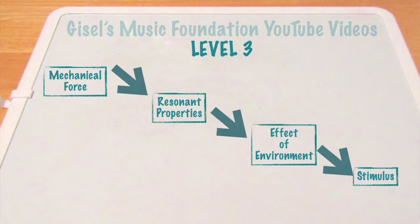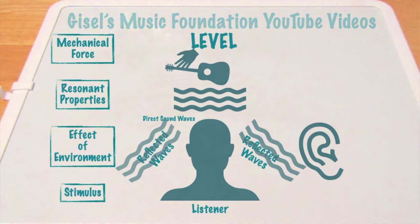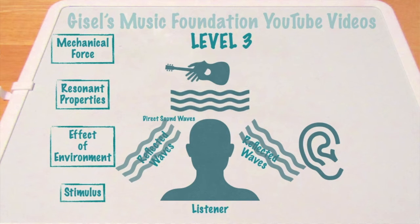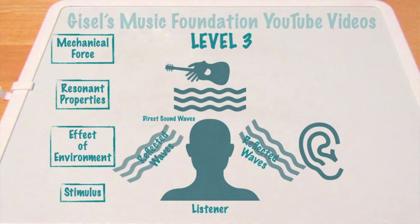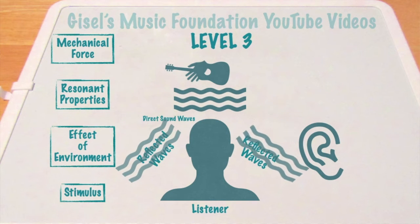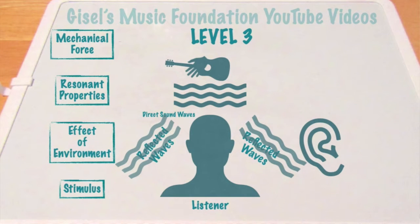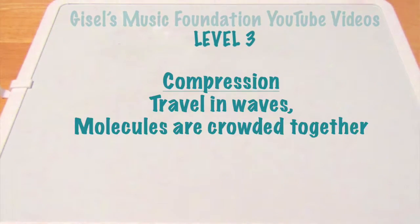Sound is a vibration that travels through matter. First, there is mechanical energy — for instance, someone strumming a string on a guitar. Then vibration occurs: molecules in the air are squeezed together and then spread apart. There is compression, which is the part of the sound wave where molecules are crowded together.